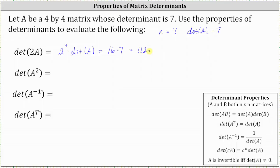Next, we have the determinant of A squared. There is no property for A squared, but we can write A squared as A times A. This is equal to the determinant of A times A.